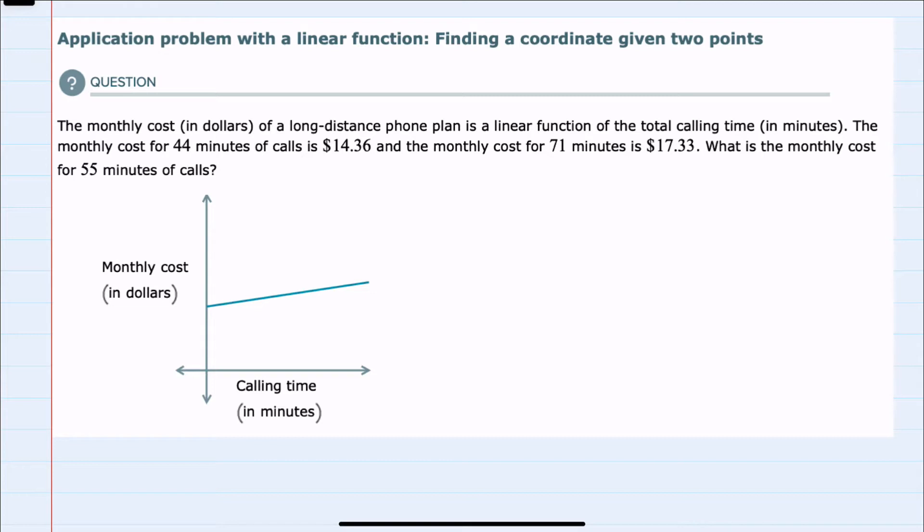We're told that the monthly cost in dollars of a long-distance phone plan is a linear function of the total calling time in minutes. The monthly cost of 44 minutes is $14.36, and the monthly cost of 71 minutes is $17.36. What's the monthly cost for 55 minutes?